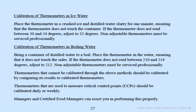To calibrate in boiling water: bring a container of distilled water to a boil, place the thermometer in the water ensuring it does not touch the sides. If it does not read between 210 and 214 degrees, adjust to 212 degrees. Non-adjustable thermometers must be serviced professionally. Thermometers that cannot be calibrated by these methods should be compared against calibrated thermometers. Thermometers used to measure critical control points in HACCP plans should be calibrated daily or weekly. Managers and certified food managers can assist with this process.